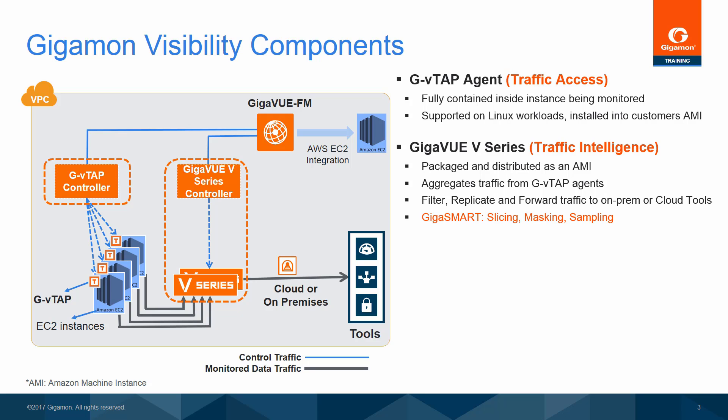The GigaVUE V-Series Controller coordinates traffic flows for multiple GigaVUE V-Series Nodes and orchestrates the flow of traffic from GigaVUE V-Series Node to the monitoring tools. GigaVUE FM uses one or more GigaVUE V-Series Controllers to communicate with the GigaVUE V-Series Nodes. GVTAP and GigaVUE V-Series Nodes form the Visibility Tier Controller, which is used to enable rapid and massive scaling of visibility by proxying configuration changes to the GVTAP agents and GigaVUE V-Series Nodes for GigaVUE FM.